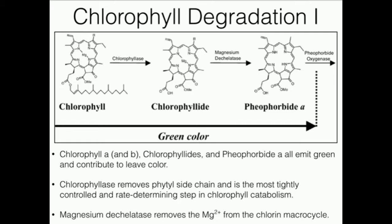One thing I want to point your attention to — and I like this figure a lot — is that chlorophyll A, chlorophyll B, the chlorophyllides, and pheophorbide A, the product of magnesium d-chelatase, these three molecules emit green. In fact, it's mainly these molecules that actually produce the green color that you see on leaves. They're present in very high amounts in plants, and they contribute to the green color because they emit green.